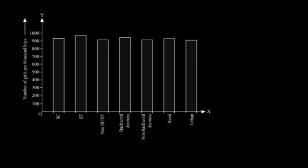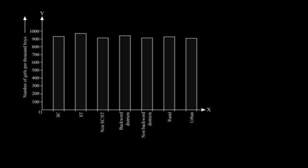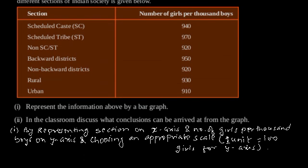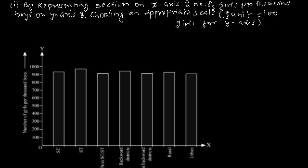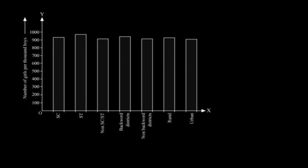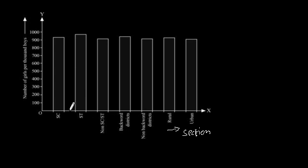This is our required graph, where section is on the x-axis and number of girls per 1000 boys is on the y-axis. Here we can see all the bars are of the same width and have equal spacing between them.